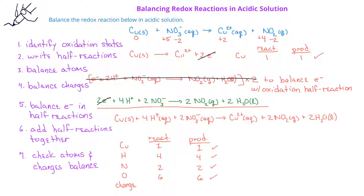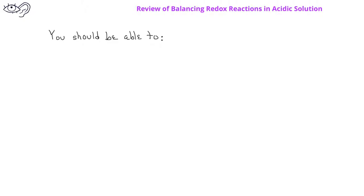We should also check the charge. We see that on the reactant side we have an overall charge of plus two, and on the product side we also have a charge of plus two. After watching this video, you should be able to balance redox reactions in acidic solution.